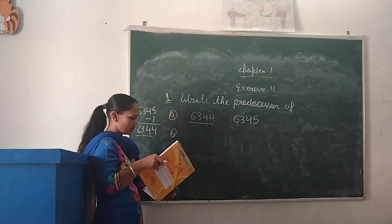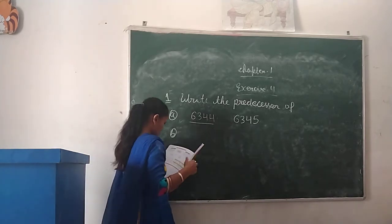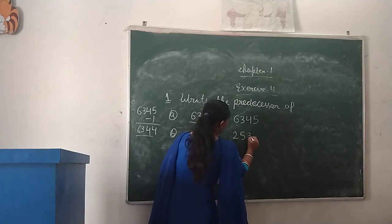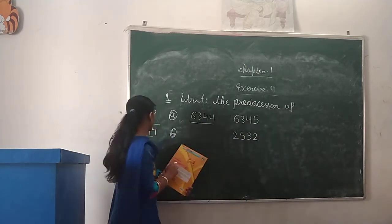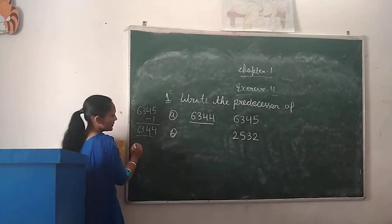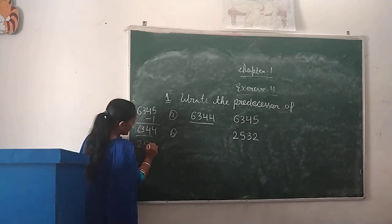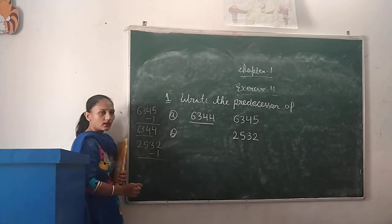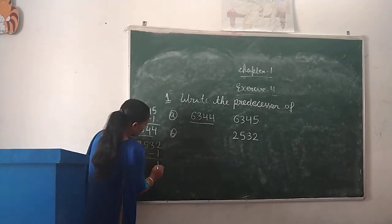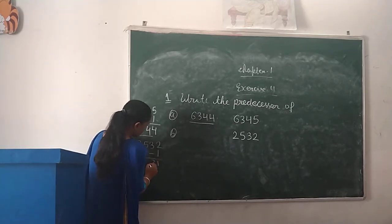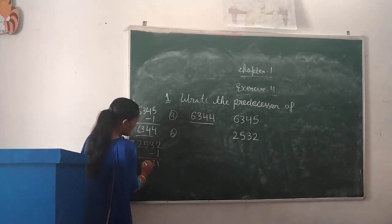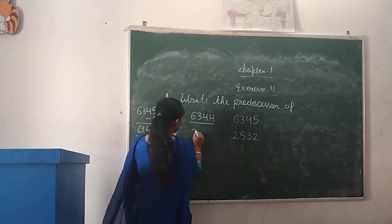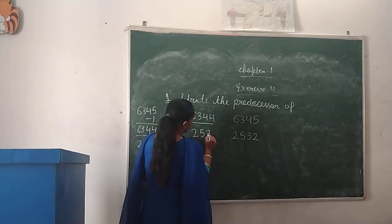Next, Part B: 2,542. We will subtract 1. 2 minus 1 is 1. 3 minus 0 is 3. 5 minus 0 is 5. 2 minus 0 is 2. So the predecessor is 2,541.